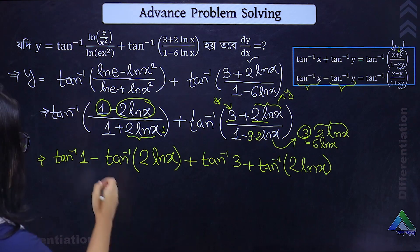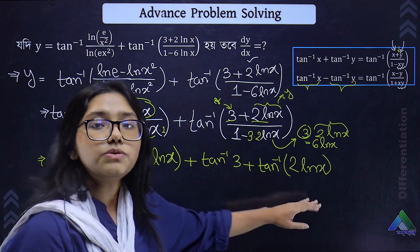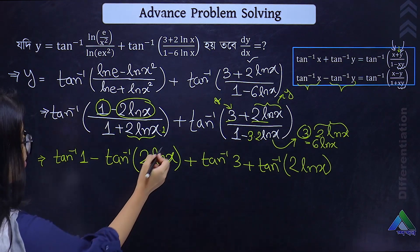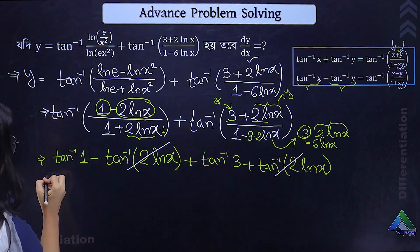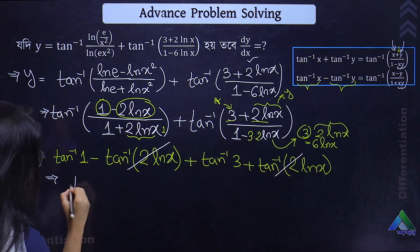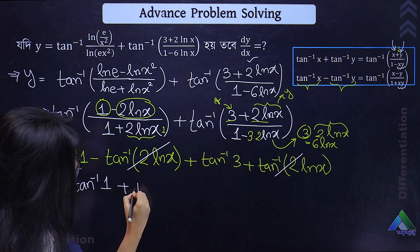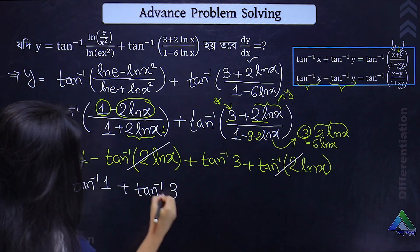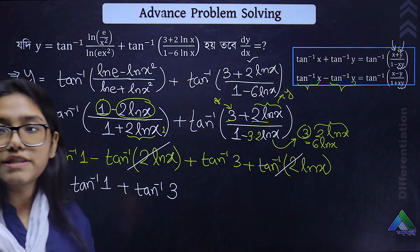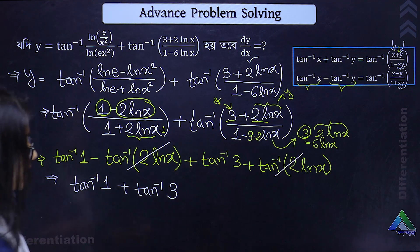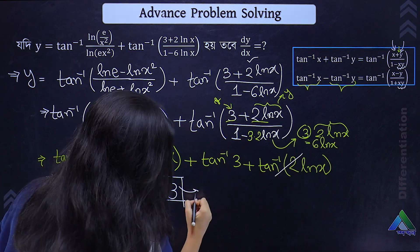So the expression becomes: (tan inverse 1 minus tan inverse 2 ln x) plus (tan inverse 3 plus tan inverse 2 ln x). The minus tan inverse 2 ln x and plus tan inverse 2 ln x cancel out, leaving tan inverse 1 plus tan inverse 3, which is a constant.